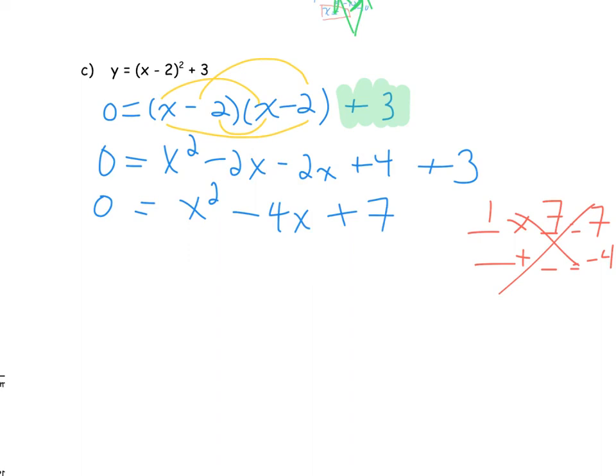Take the values of a, b, and c — which are a = 1, b = -4, c = 7 — substitute those into the quadratic formula, simplify, and then stop so we can look at the answer and interpret its meaning.